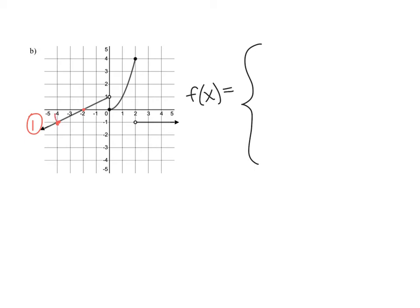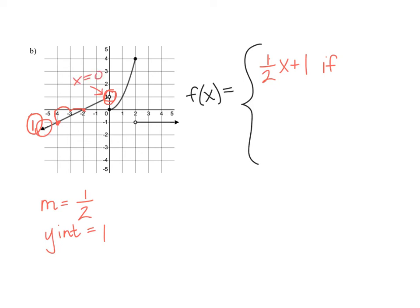Going up 1 and right 2 gives a slope of 1/2. This line has a clear y-intercept of positive 1. Therefore, the equation for this line is y equals 1/2 x plus 1. Looking at the domain: there's an arrow on the left going to negative infinity, and the line stops at x equals 0 with an open dot. So the domain is x less than 0.